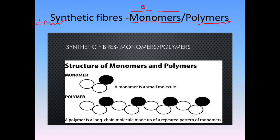What is a polymer? 'Poly' means many, and 'mer' means unit. So a monomer is one unit, and a polymer is many units.